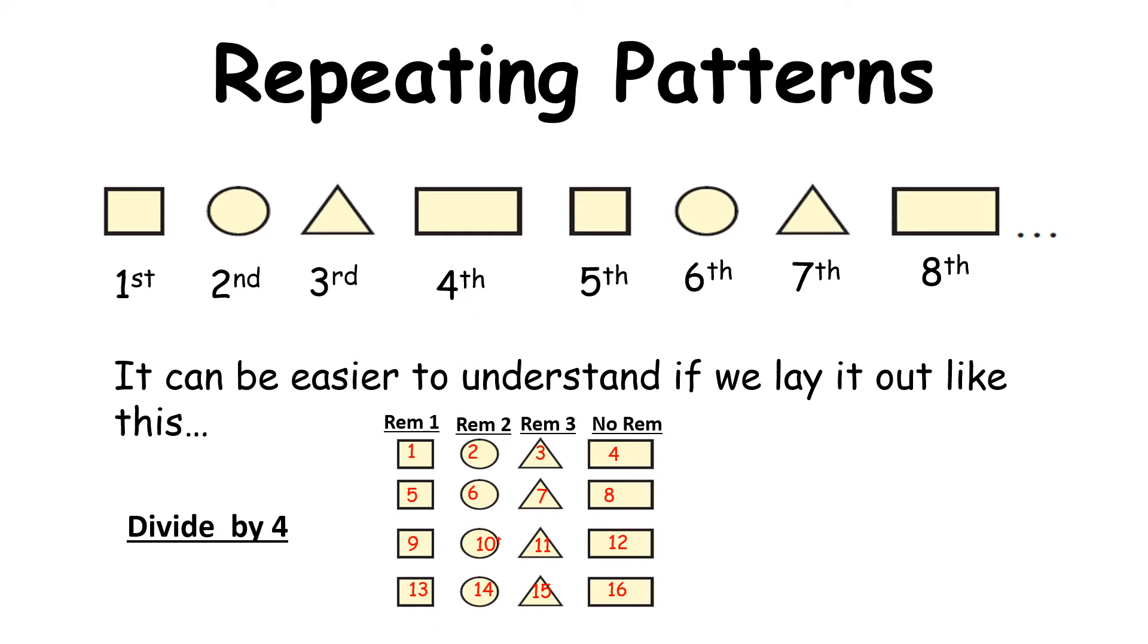So look at this for a second. I'm going to look at the third row. So nine, ten, eleven, and twelve. If I divide nine by four it goes in twice with remainder one. Ten divided by four, twice remainder two. Eleven divided by four, twice remainder three. And twelve divided by four goes in evenly three times.